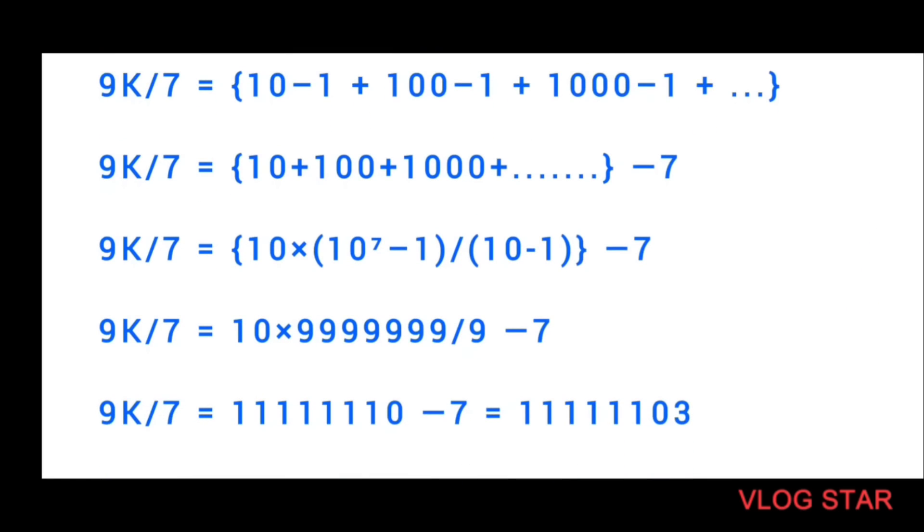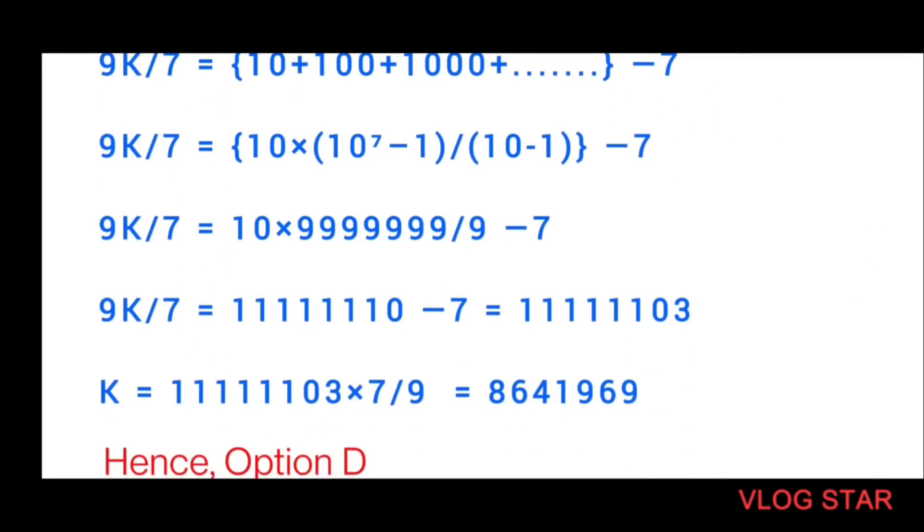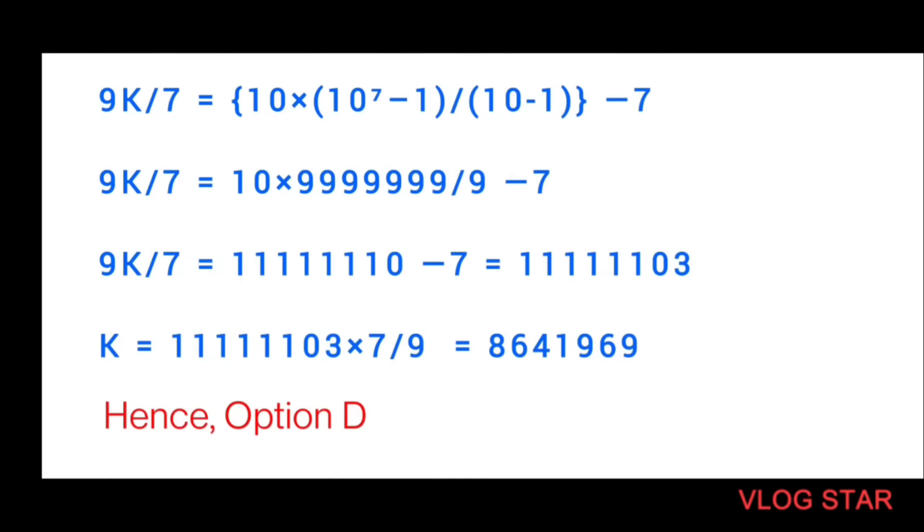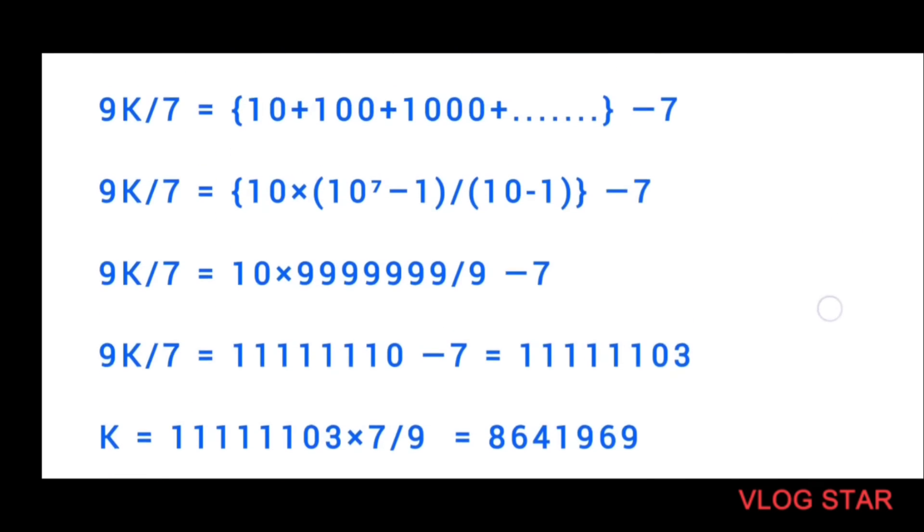Where r, that is the common ratio, is 10. And then as you can see it becomes very easy. Clearly I get the value of K because everything was divisible by 9.